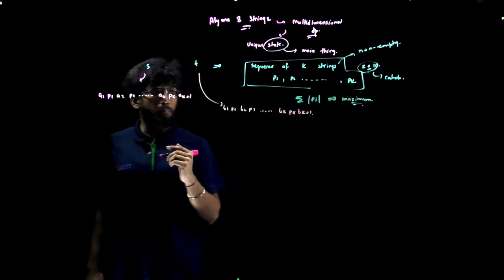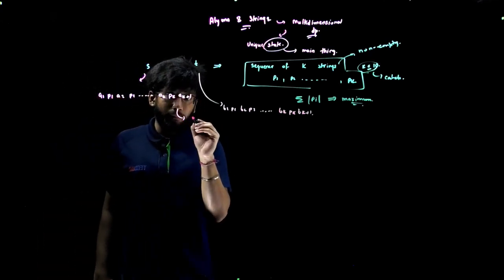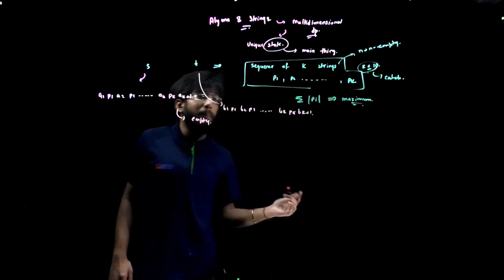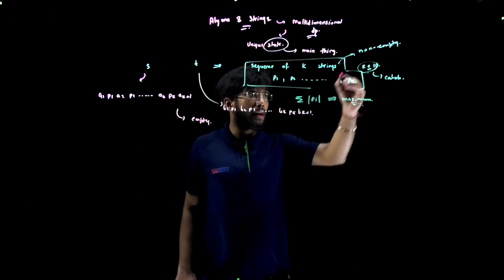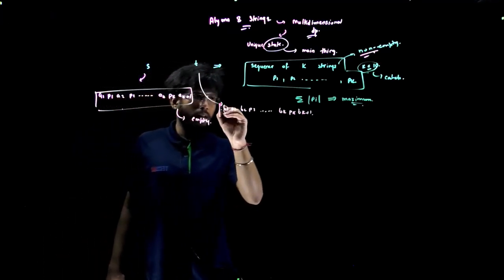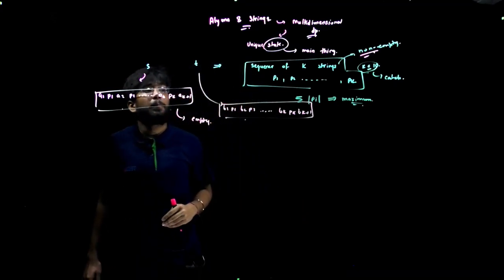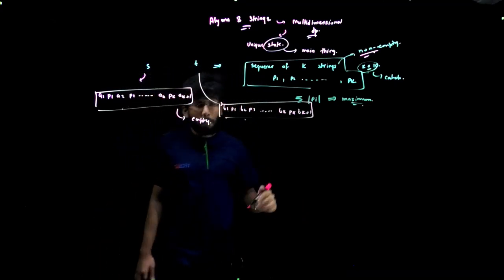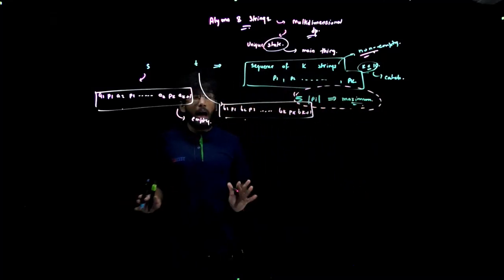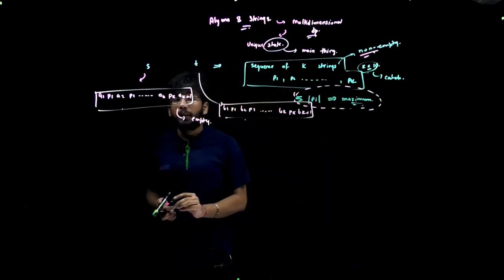Here, b1, b2, bk and a1, a2, ak all of them can be empty as well. However, p1, p2, up till pk are not allowed to be empty. This is given that there's for sure some summation that exists for these cases, some sequence of k non-empty strings that exists, but we need to actually find out the maximum amongst them. I hope the question is clear to you. If it isn't, then you can check it out on CodeForces.